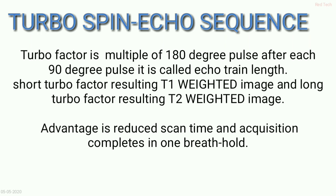You must remember: when you shorten the turbo factor, you obtain a T1-weighted image. When you increase the turbo factor — that is, increase the number of 180-degree pulses — you obtain a T2-weighted image.